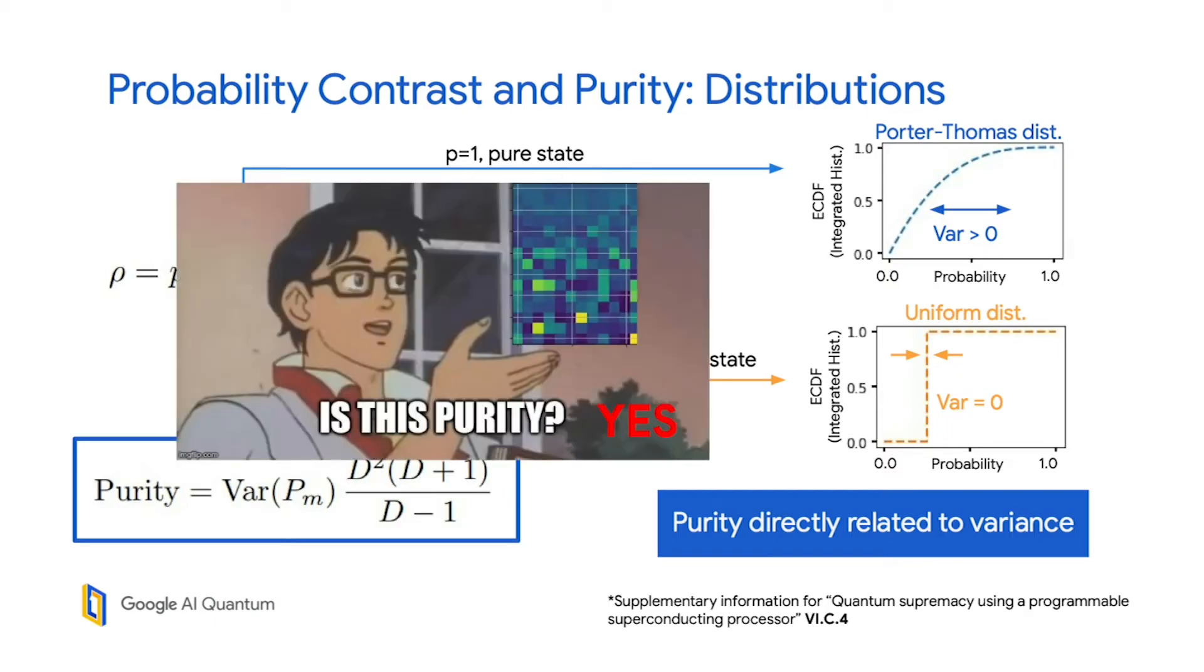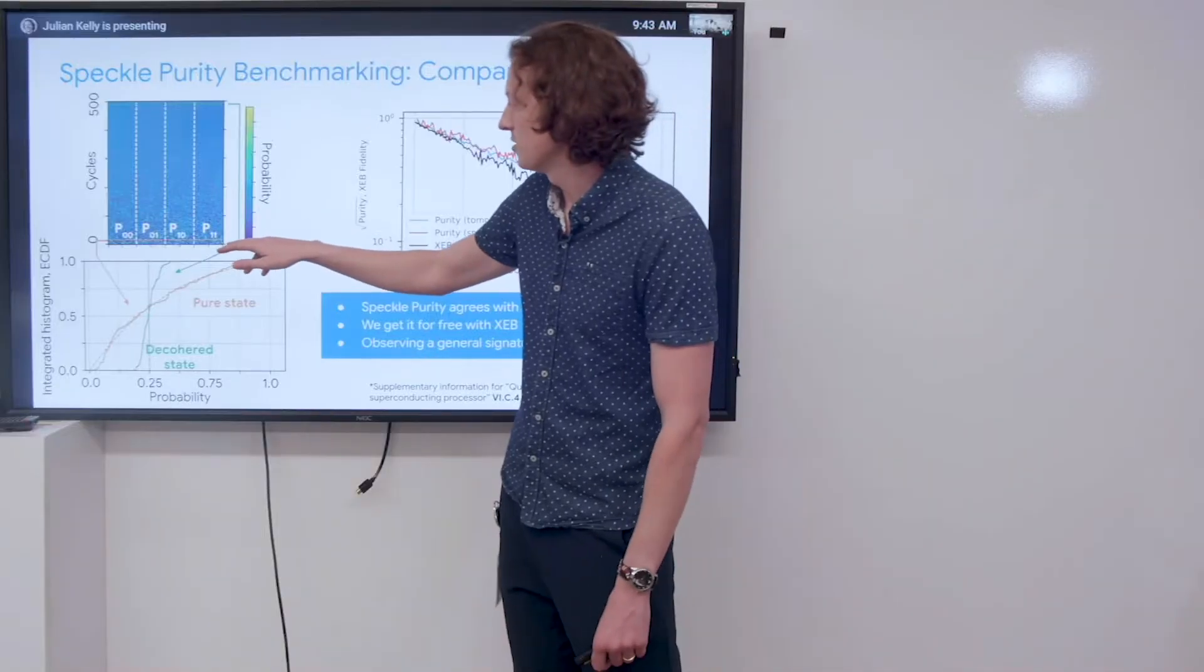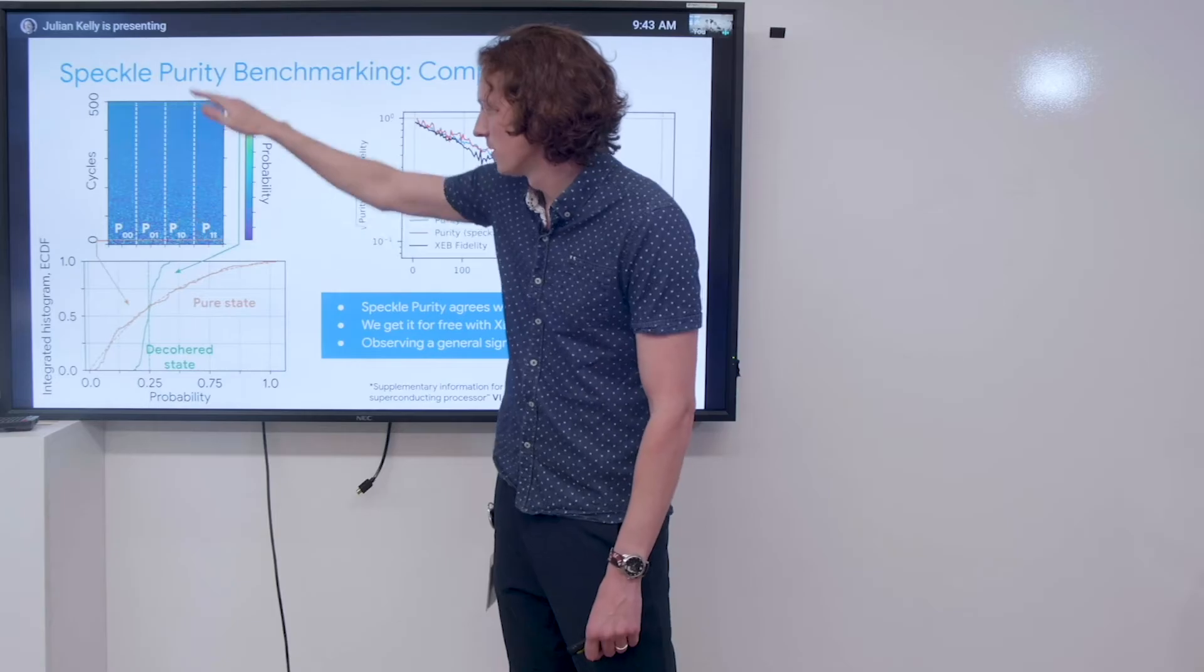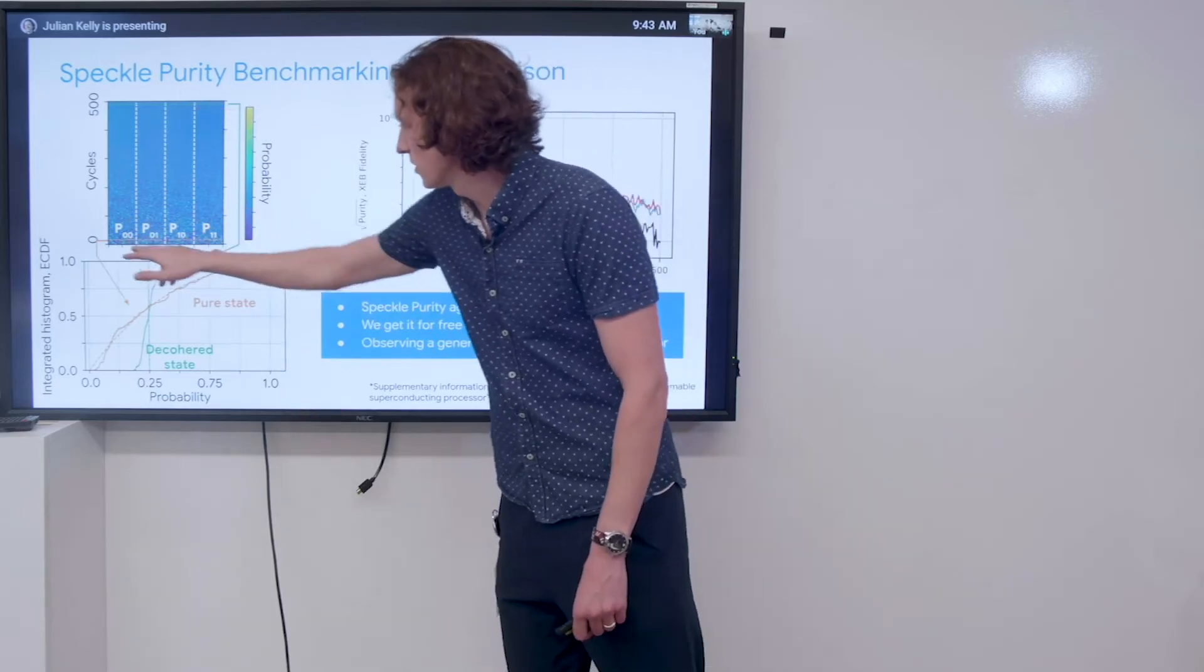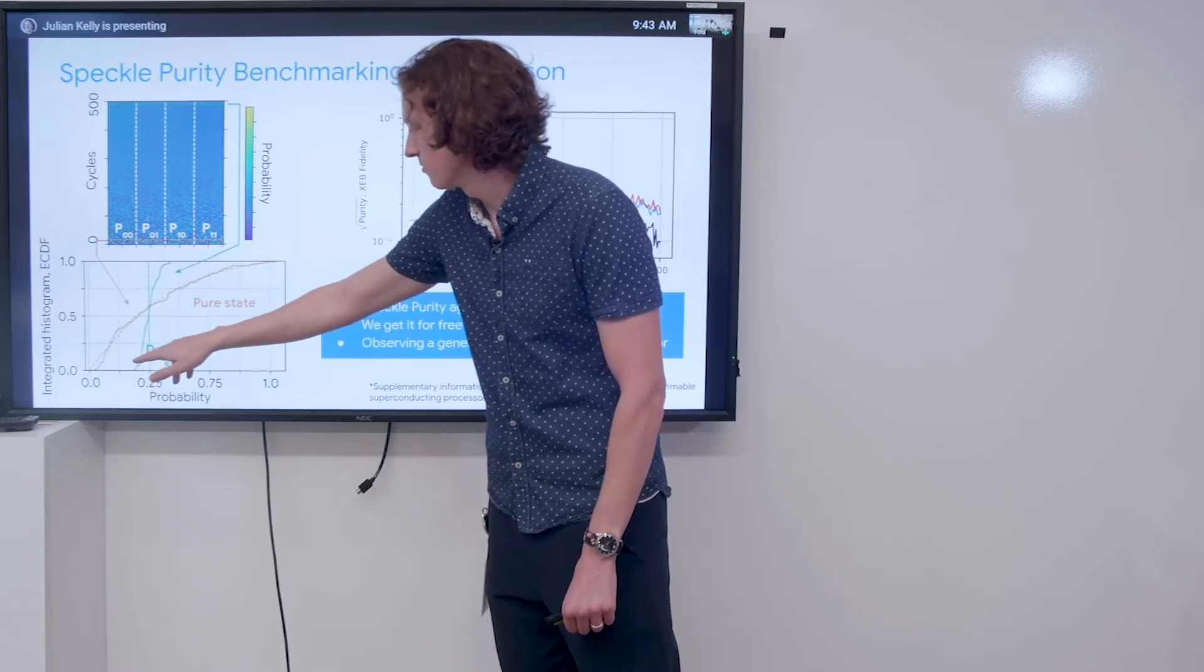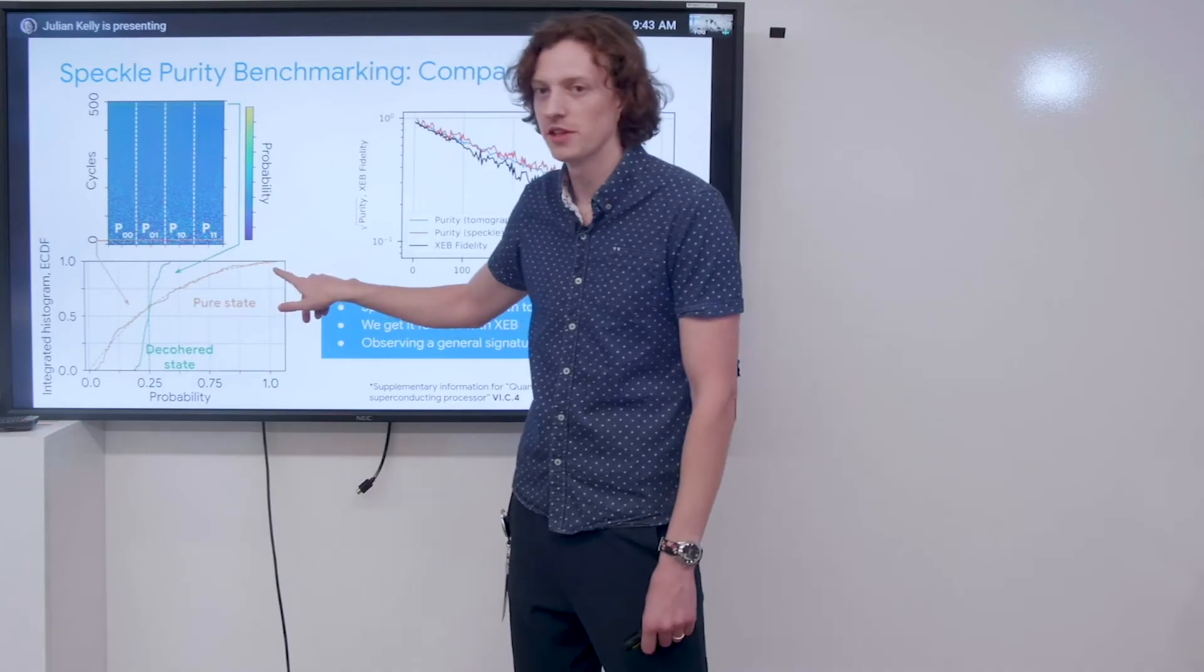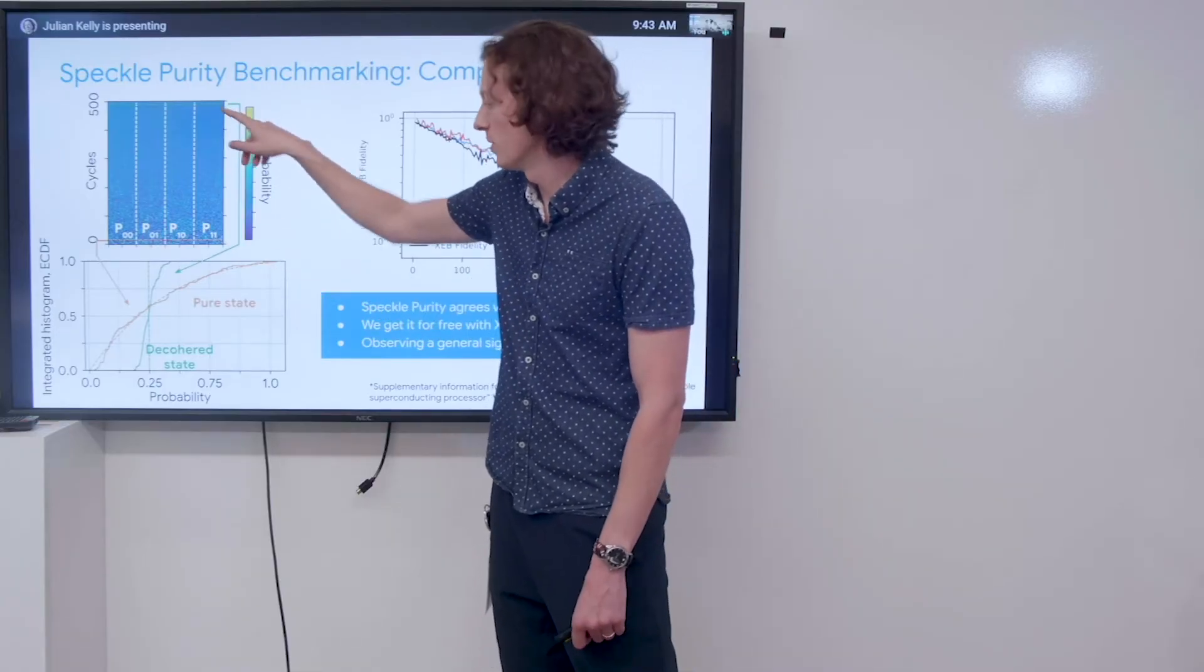So is this purity? Yes, it turns out. Let's talk about what this looks like in an experiment. Here we took some very dense XEB data, both the number of cycles this way and number of circuit instances that way. I'm going to draw a cut like this, plot the ECDF, the integrated histogram distribution, and we see that it obeys this very nice Porter-Thomas line. Then if I look over here when we expect the state to have very much decohered, we see that it does look like this decohered uniform distribution.